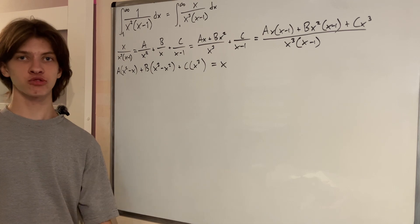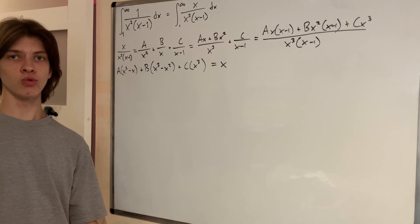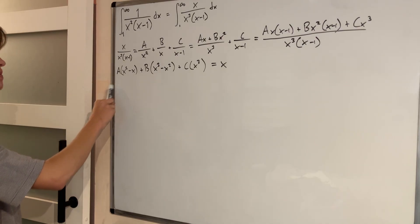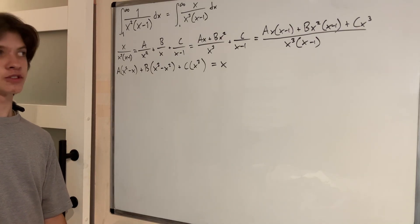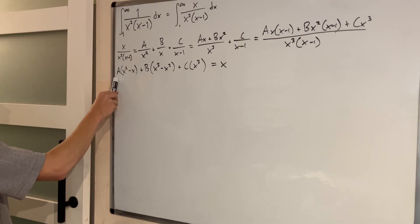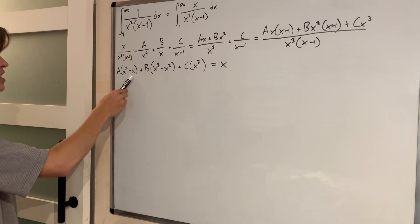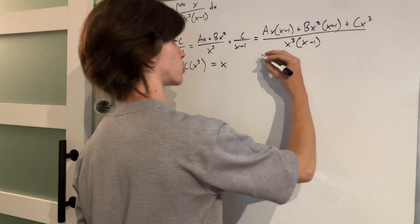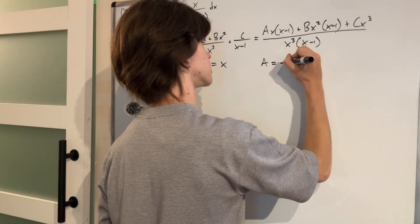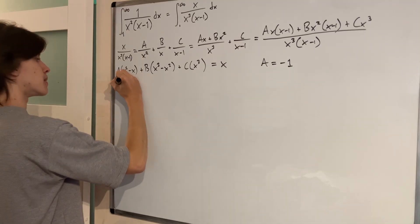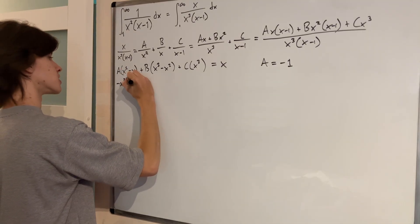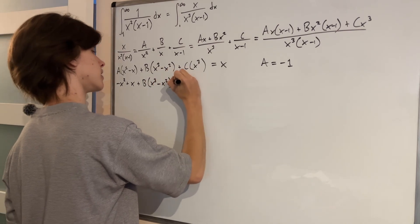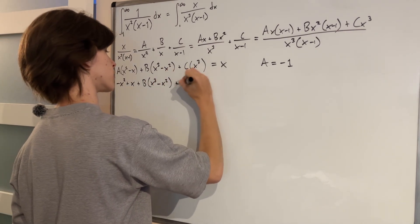Let's clean up with the distributive property. We get a times x squared minus x, plus b times x cubed minus x squared, plus c times x cubed — all equal to x. We have to choose a, b, and c such that this is equal to x. Notice how the only x term in our expression on the left is the one with coefficient a. So the only possible way we can get x on this side is to make a equal to negative 1, because then negative a times x will equal x.